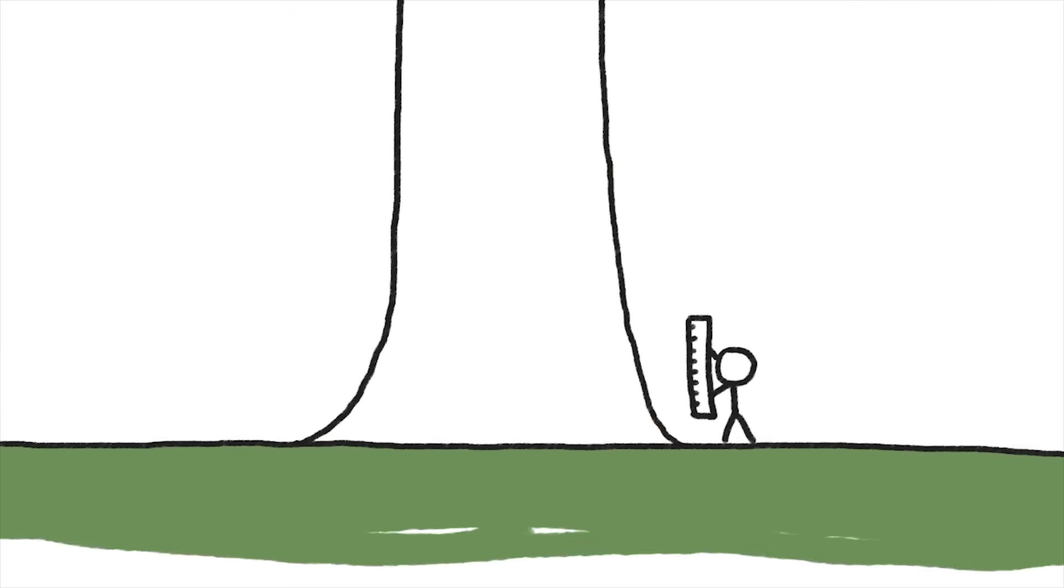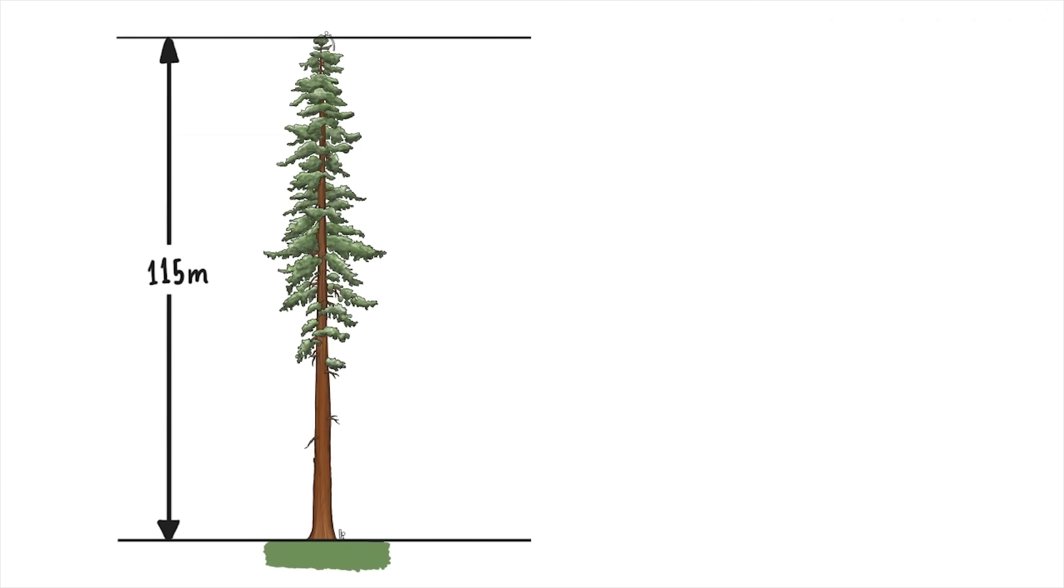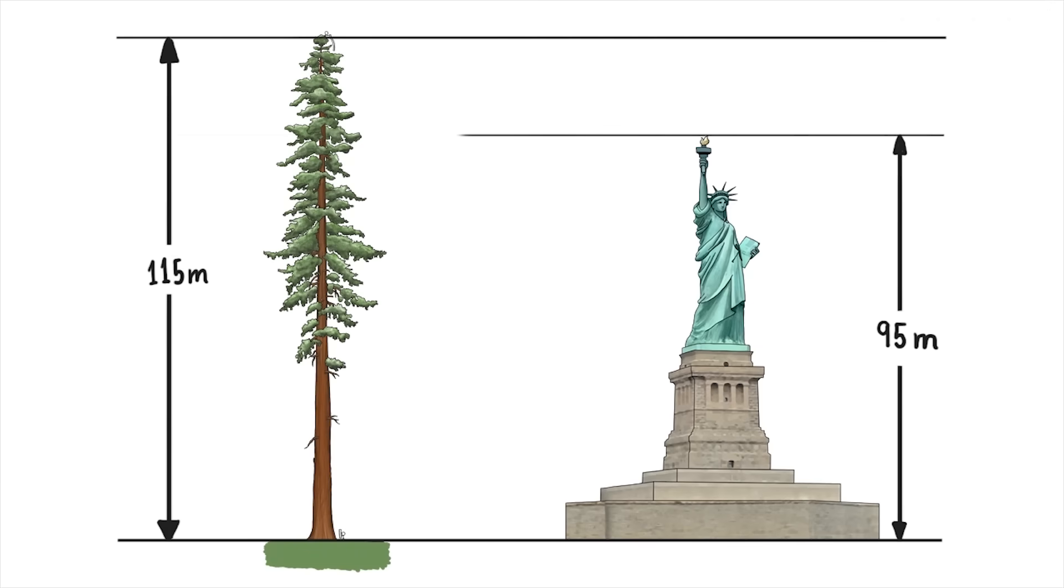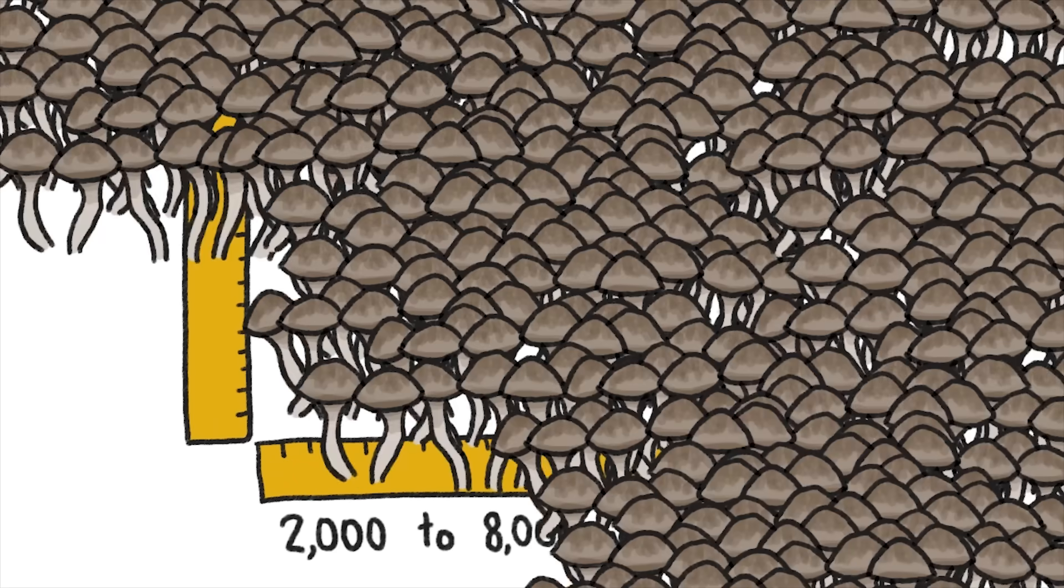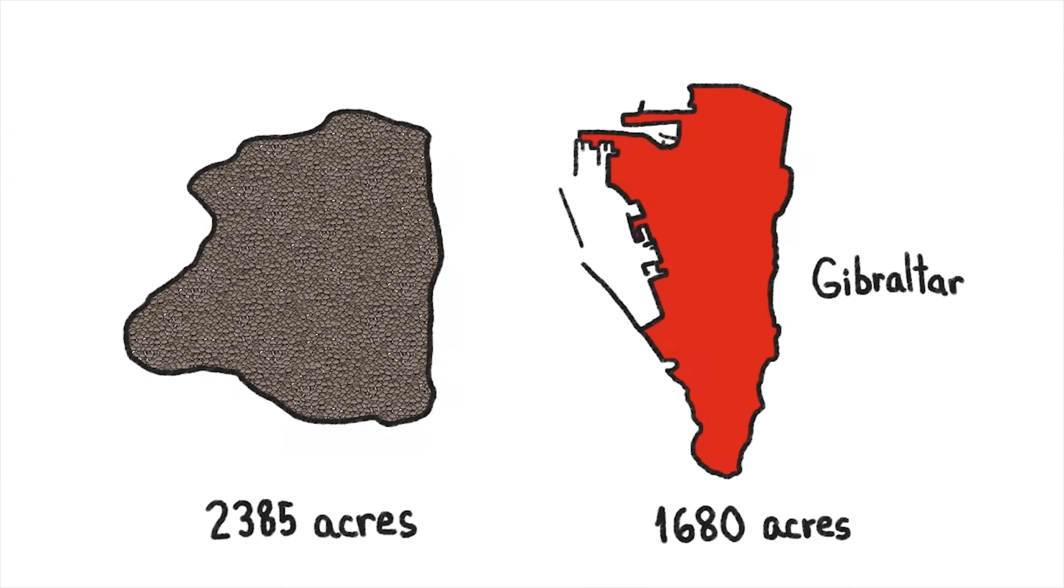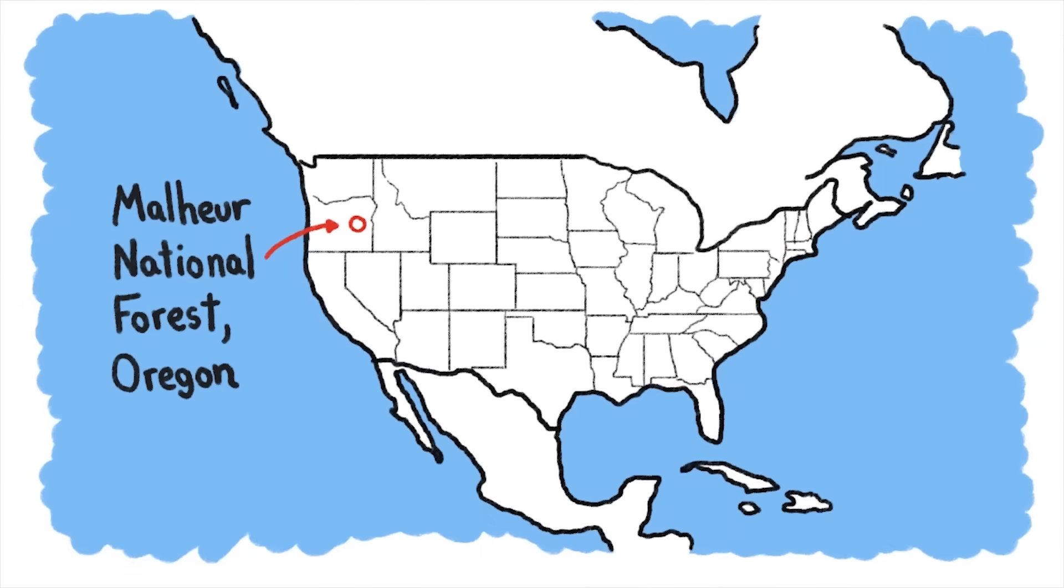The tallest may be a California redwood nicknamed Hyperion. At a towering 115 meters, this giant is taller than the Statue of Liberty. The most extensive organism is a very old, humongous fungus that covers a whopping 2,385 acres in a national forest in Oregon.